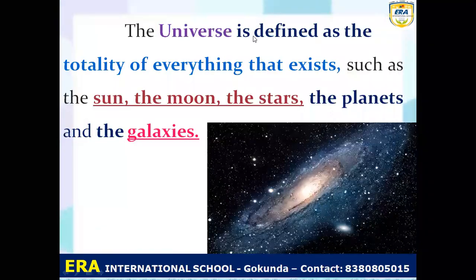The universe is defined as the totality of everything — whatever exists. That includes the sun, the moon, the stars, the planets, and the galaxies. Together, this is called the universe.